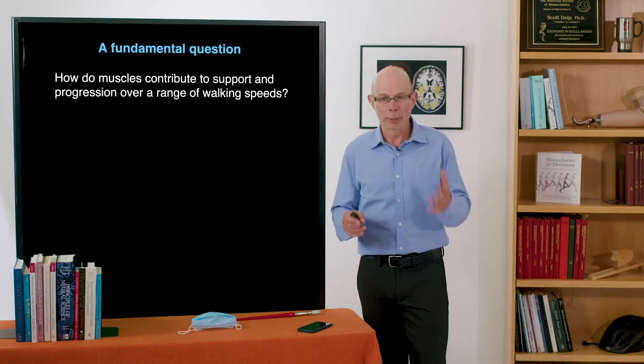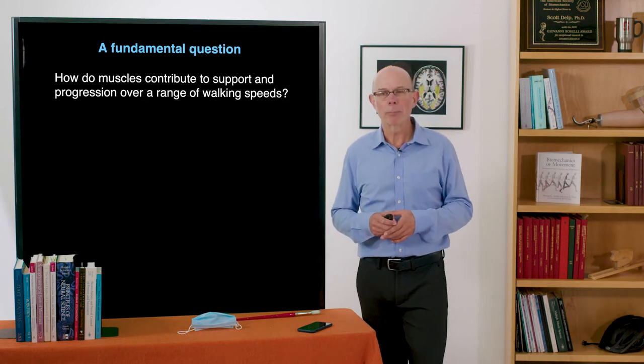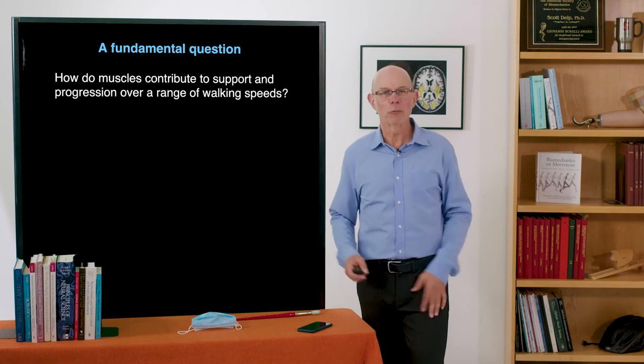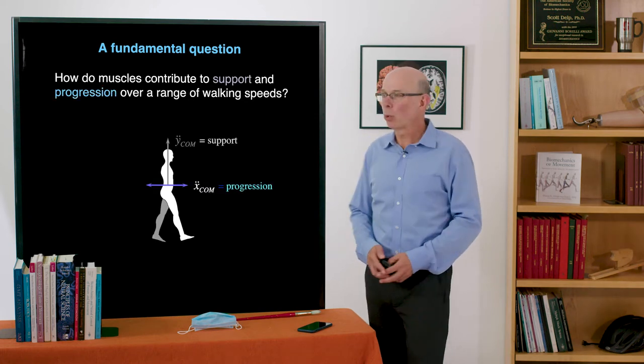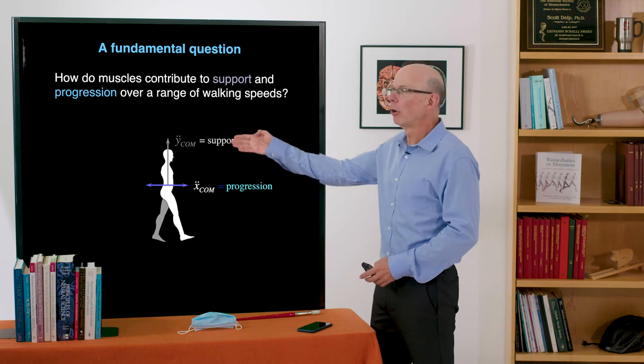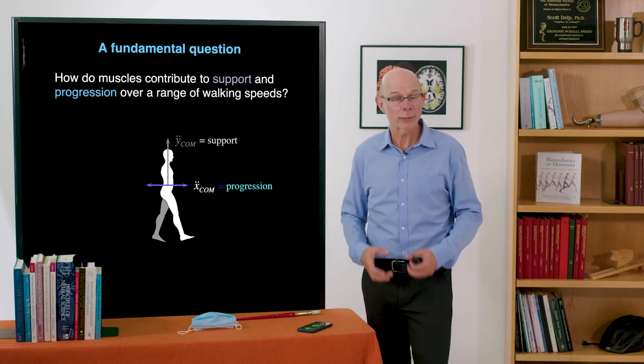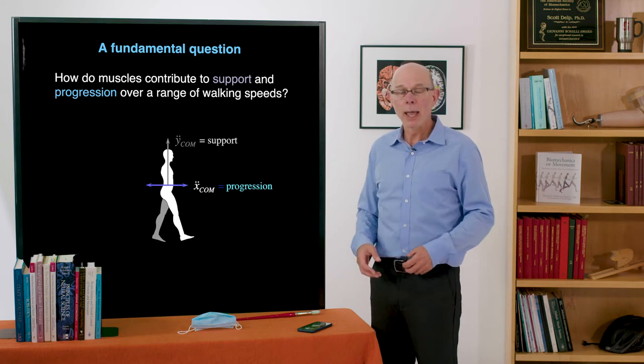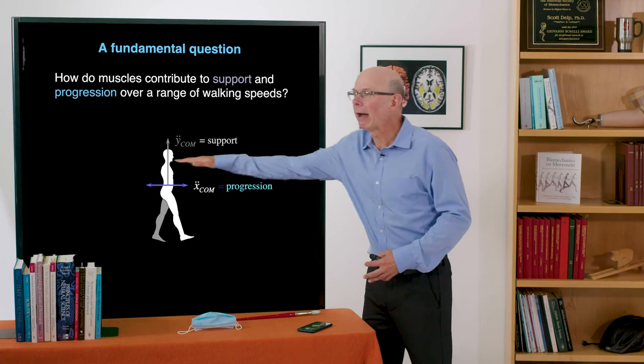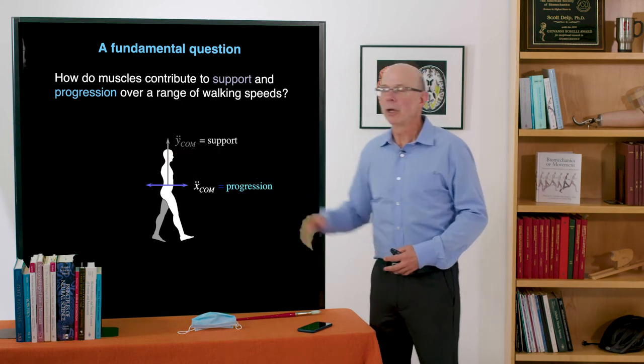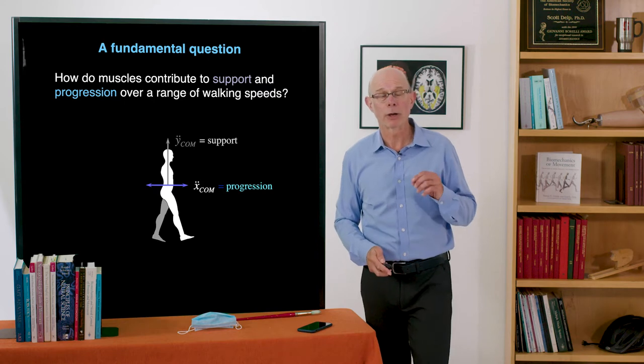So one fundamental question is this: How do muscles contribute to support and progression over a range of walking speeds? By support I mean vertical acceleration of the mass center. That's what provides body weight support. And progression, how do we modulate speed? It's the fore-aft acceleration of the mass center. So pretty simple question and how do those vary with speed?